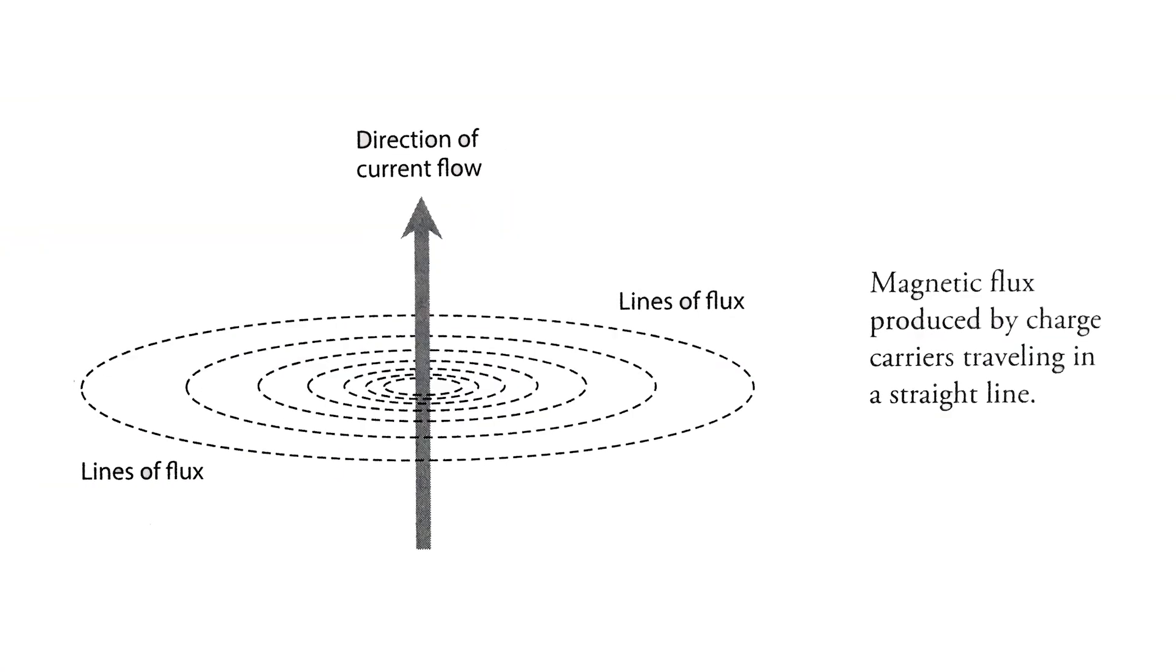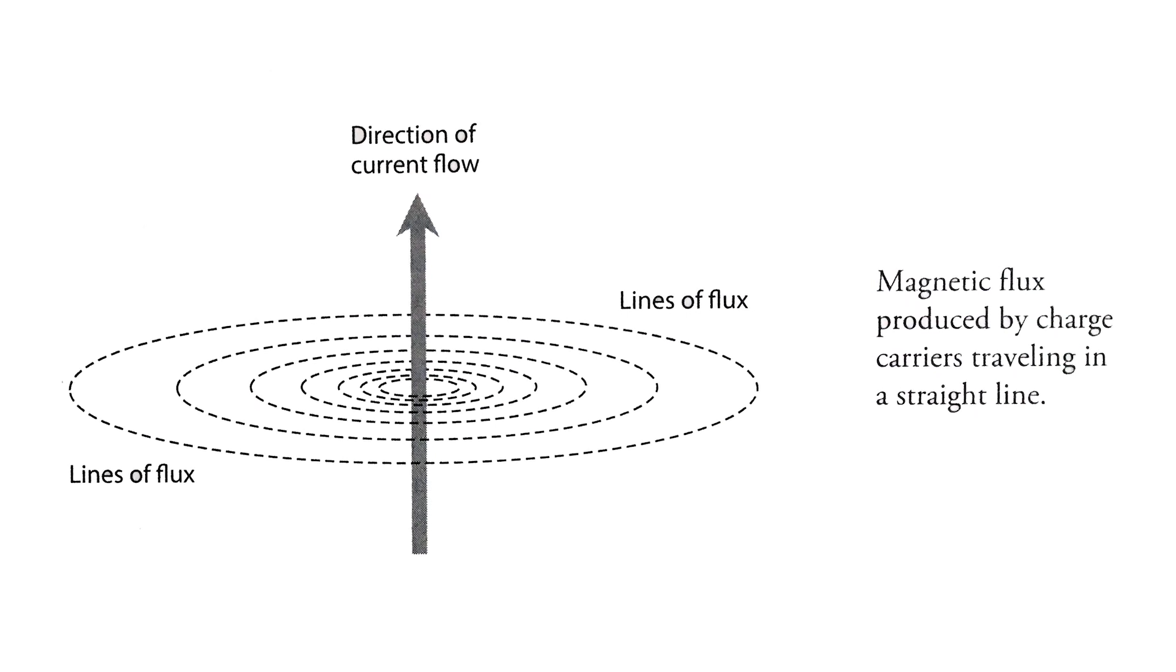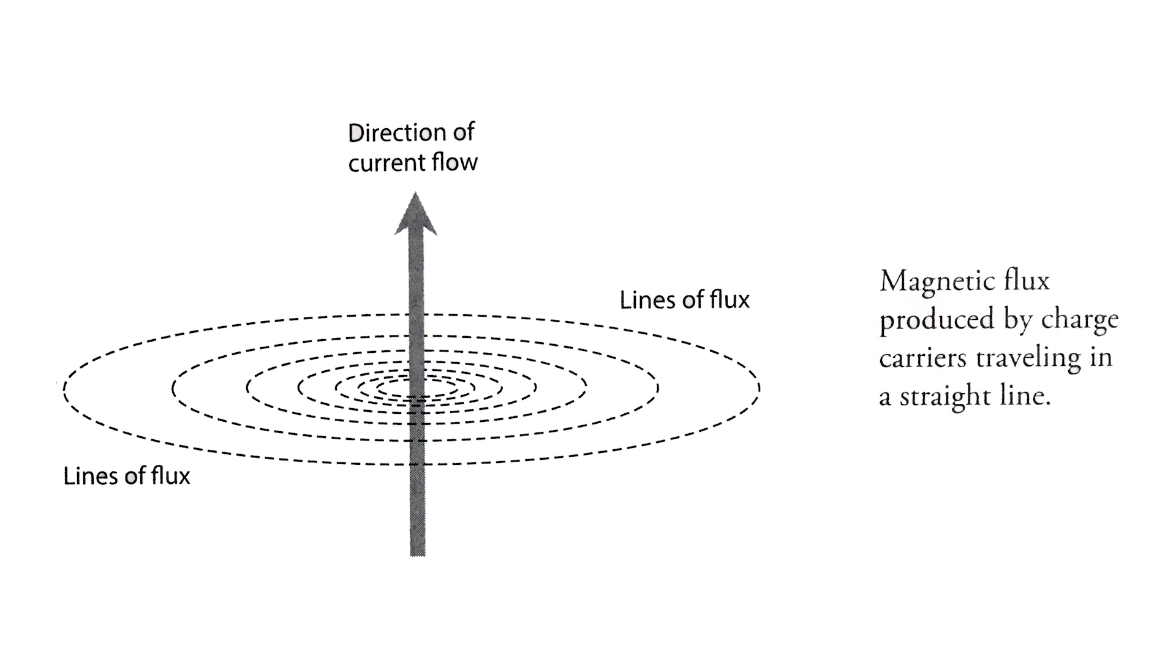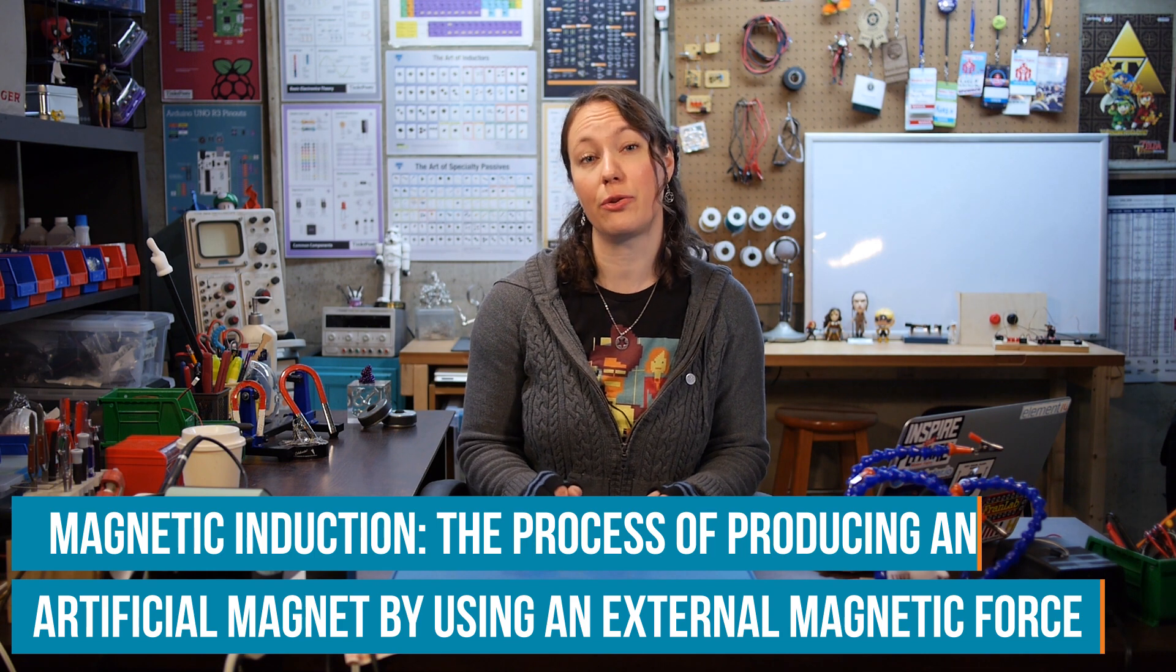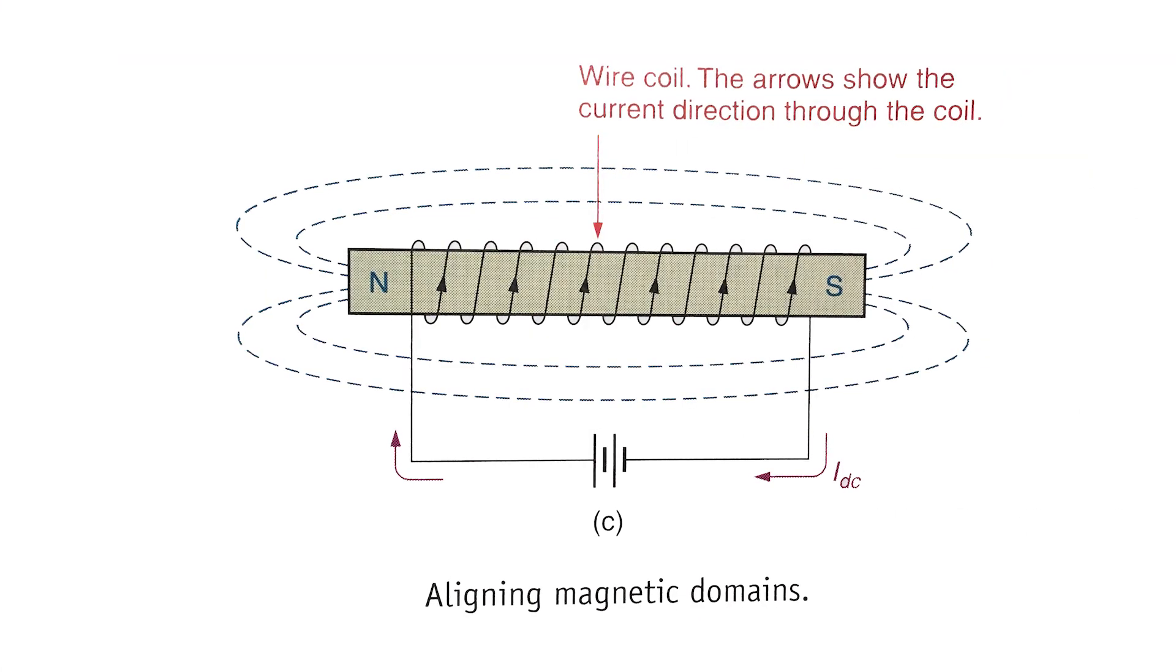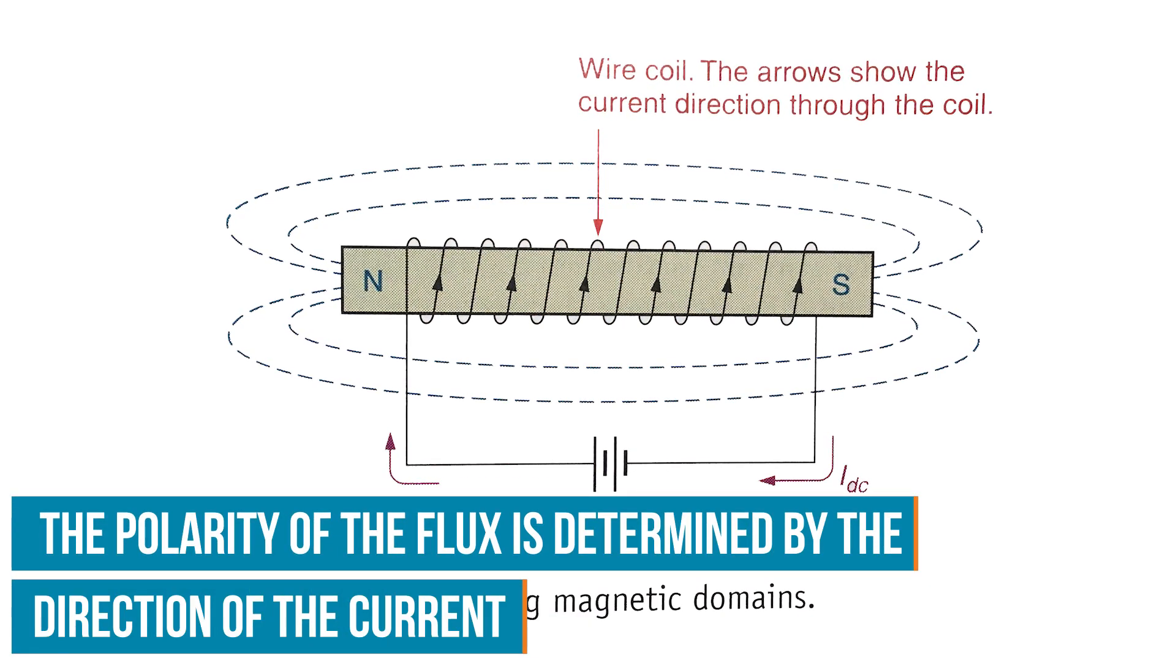Most magnets are artificially produced by some external source. Since electrons have magnetic fields, their motion, like an electric current flowing through a wire, also produces a magnetic field or flux. One way to create a magnet is by using a strong DC current. This is most effectively done by running the current through a coil of wire. When current flows through the coil, the lines of force generated by the current add together to form a bigger and stronger magnetic field.